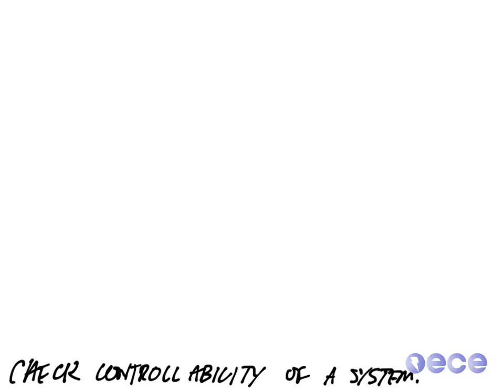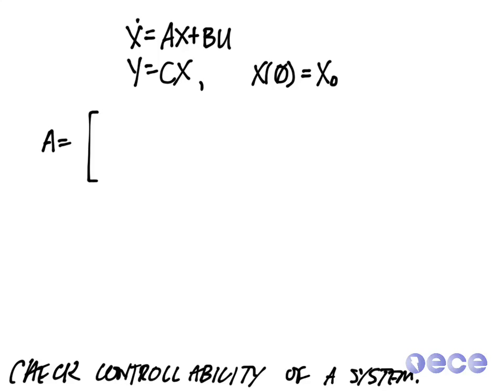So if we have a system defined as x dot equals Ax plus Bu and y equals Cx, and we have some initial condition x of 0 is a vector x0. With a system defined like this, let's say that I have A equal to minus 1, 0, 0, minus 3, and B equal to 1, 1.